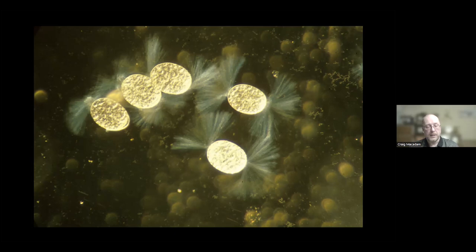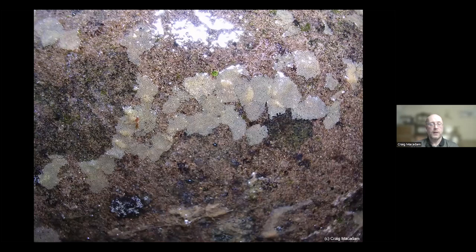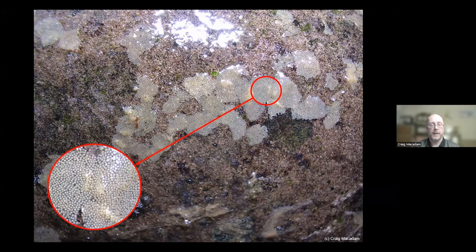Some Baetis species go one step further to ensure eggs reach a good spot. The female lands on an exposed stone, pulls herself through the water surface, and lays eggs directly onto the underside of the stone. Each patch can contain maybe a thousand eggs, packed together. If there are few stones in a river, bridge supports can become covered in layer after layer of eggs, and invertebrates like caddisflies will graze on them for the protein they contain.